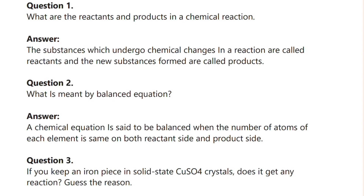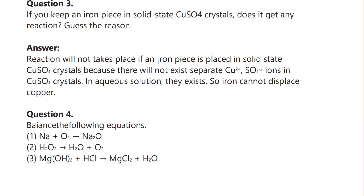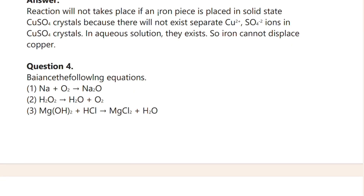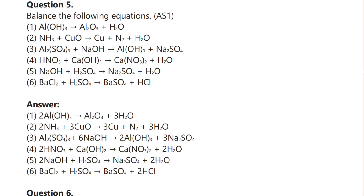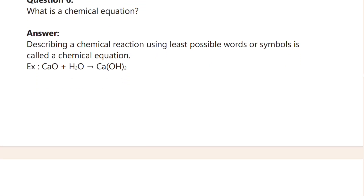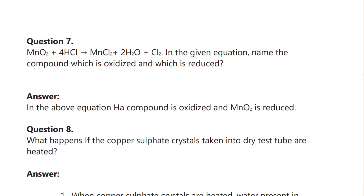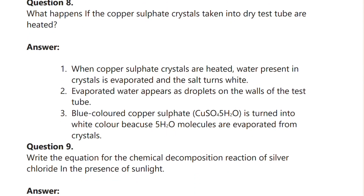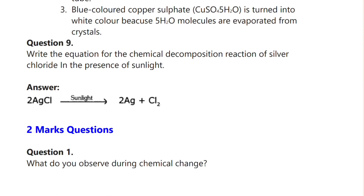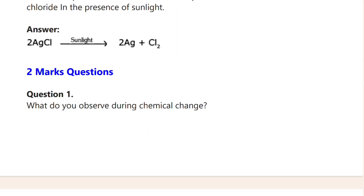Here you can see question number one through question number three, followed by question number four. Then question number five, which includes a sub-section on balancing equations with the answer given. Question number six asks you to describe a chemical reaction using the least possible words and symbols. Questions seven, eight, and nine are also covered here. That completes the one-mark questions.